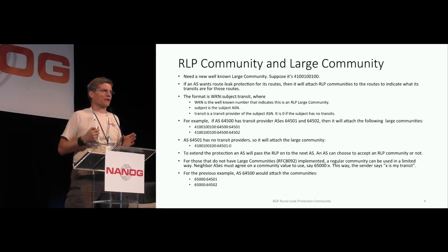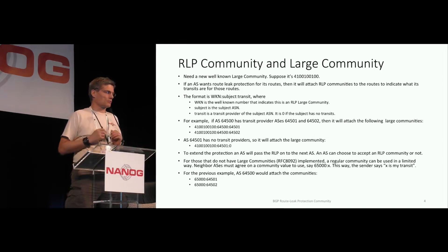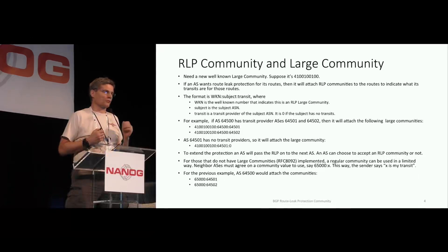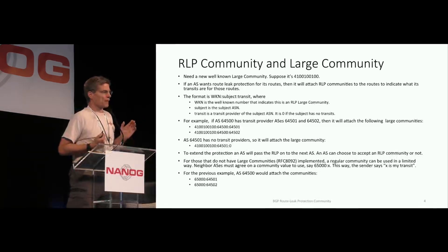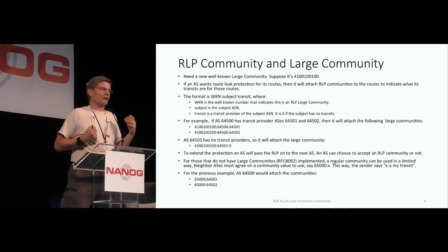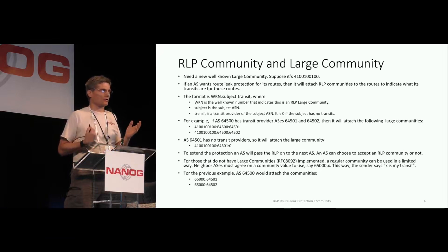I found that the large community is a convenient place to put that information. In the large community we have three 32-bit fields. I've chosen to use the first field as a well-known number to say this large community indicates a route leak protection. The other two fields are the nominating AS and the nominated AS. The nominating AS is the one who says these are my transits. If an AS does not have any transits, it nominates AS number zero as being its transit, to distinguish those ASs that do not send anything from those that have no transits.